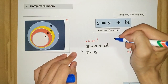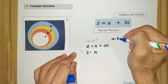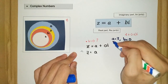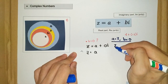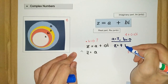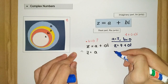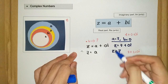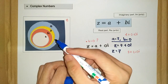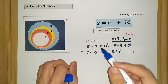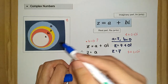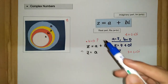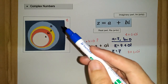For instance, let's say a equals 7 and b equals 0. What happens here is z equals 7 plus 0i, so z is just equal to 7. And as we know, 7 is just a real number. So when b is equal to 0, our complex number is just the same as the real number. This helps clarify the relationship between complex numbers and real numbers.